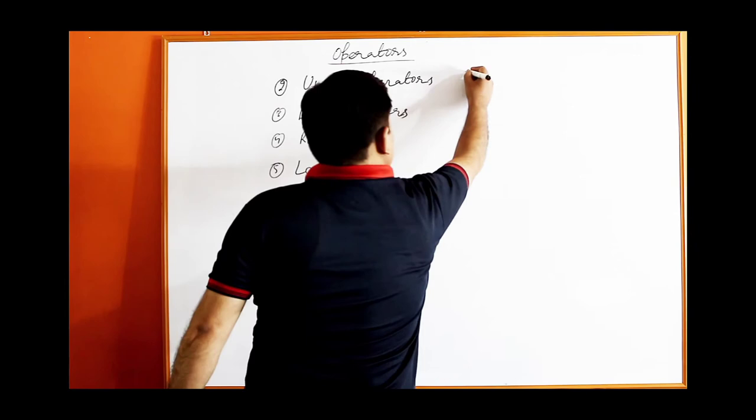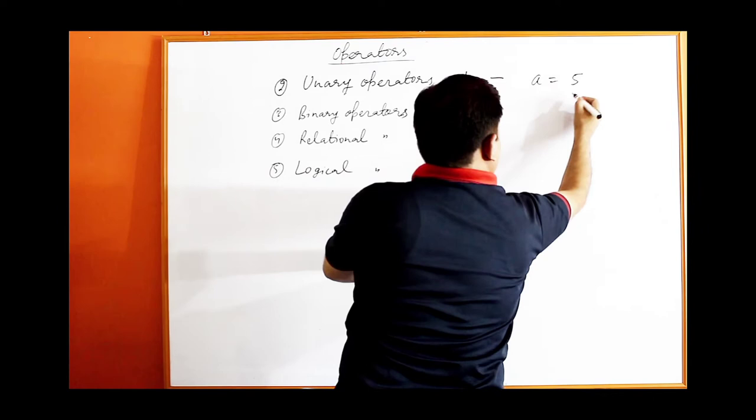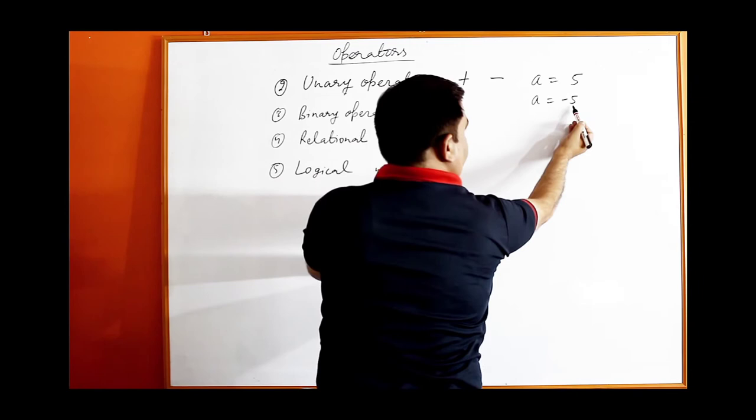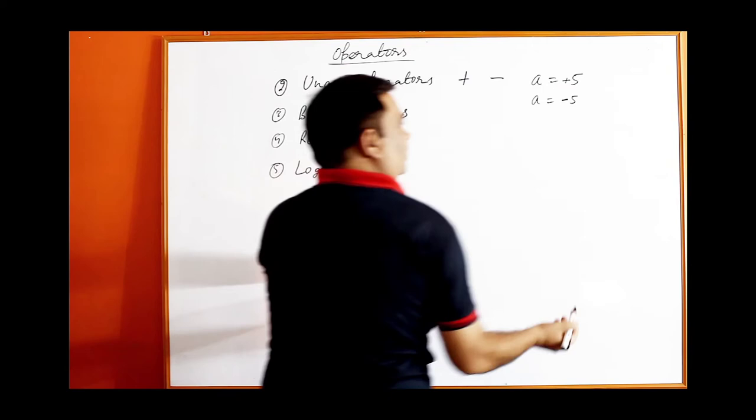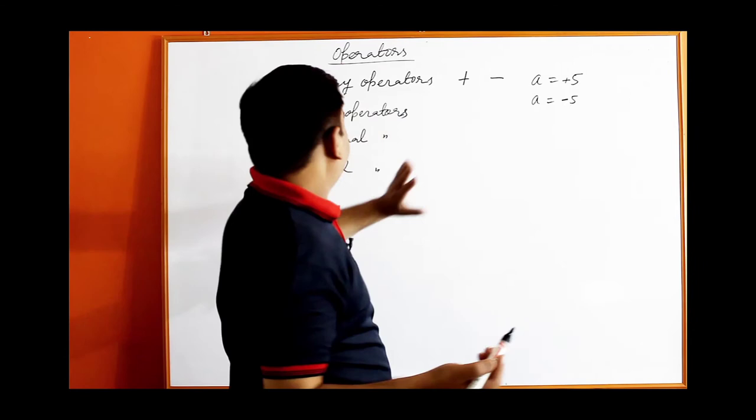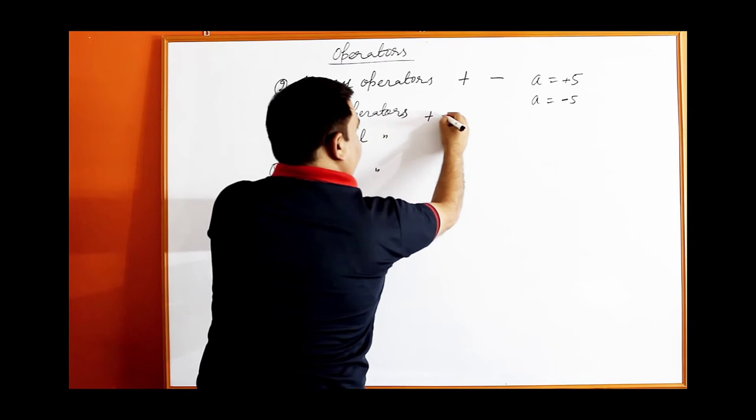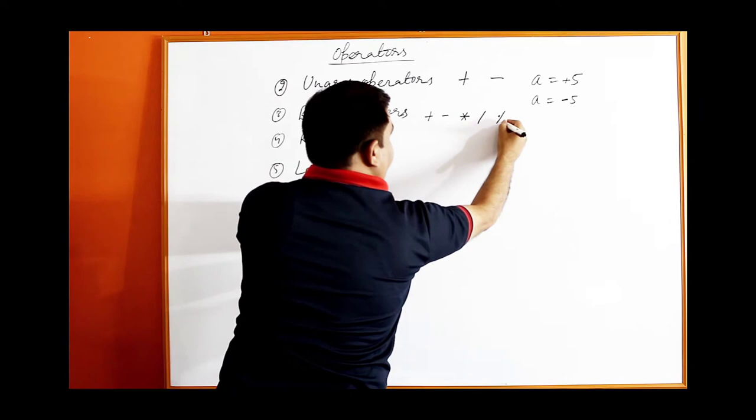The next operator is the unary operator. There are two unary operators: plus and minus, making a value either positive or negative. A unary operator takes only one operand. The plus sign is optional since positive values can be written without it. After unary operators come binary operators: plus, minus, multiply (star), divide (slash), and the percent sign.